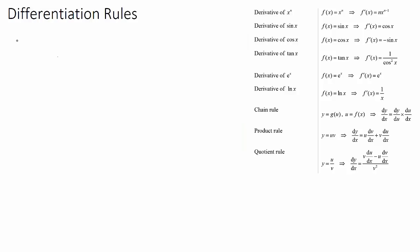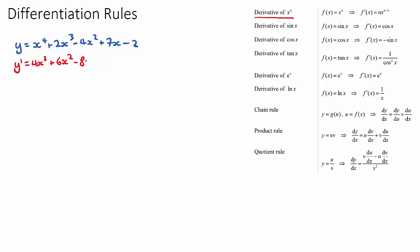We will get given a function — either y or f(x). So if we have y equals x to the power of 4 plus 2x cubed minus 4x squared plus 7x minus 2, this is a polynomial function. We can derive using the power rule: bring the power down and subtract one from the power. So y dash is 4x cubed plus 6x squared minus 8x plus 7, and a constant derives to 0.